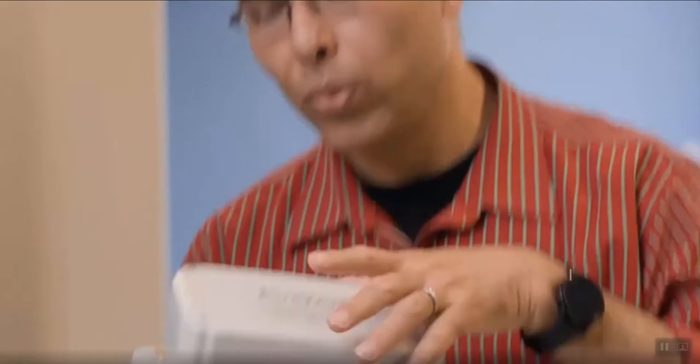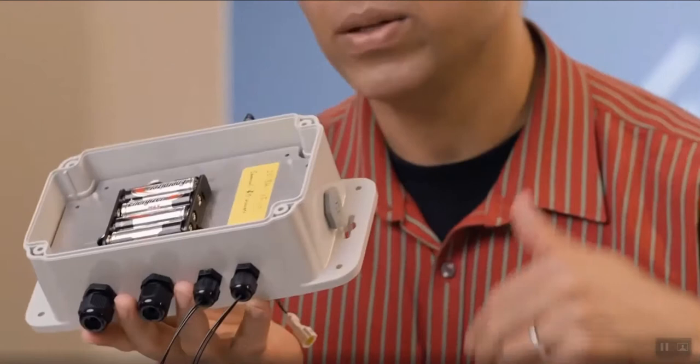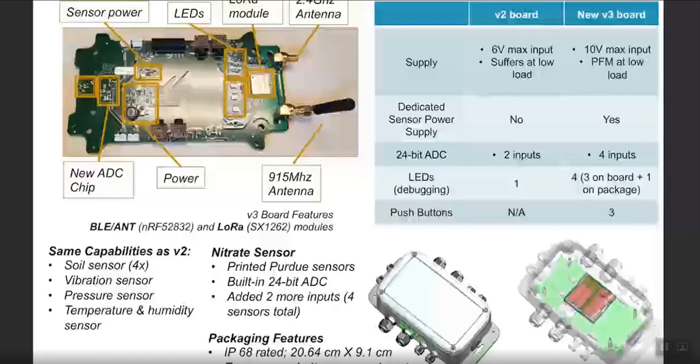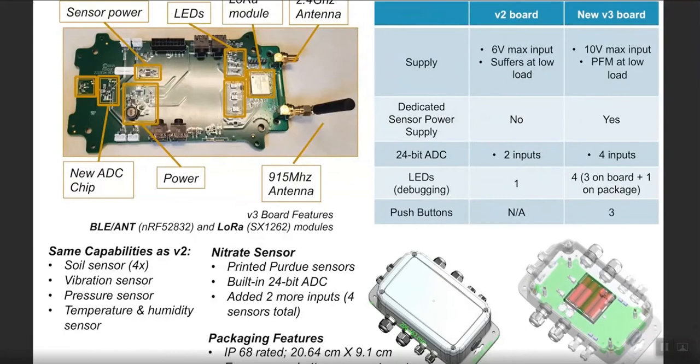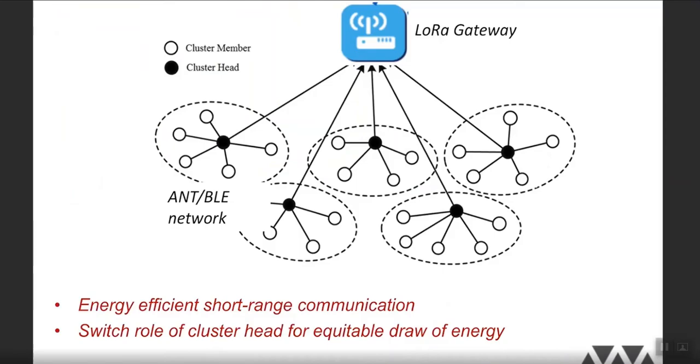So on the hardware side, this is an example of a node that we have built and deployed. And within this node, there is packaging so that it is relatively immune to environmental effects. And right here in this board, we have the capability for long-range wireless communication through a technology called LoRa.